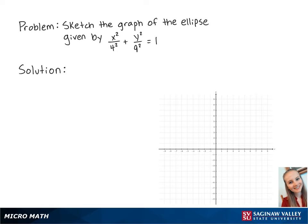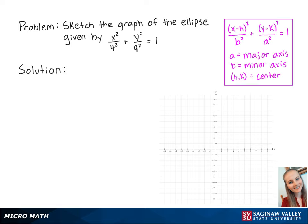For this problem, we're going to sketch the graph of the ellipse given by x squared over 4 squared plus y squared over 9 squared equals 1. Here we have the standard equation of an ellipse.